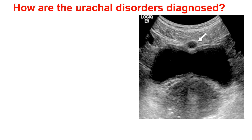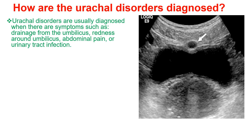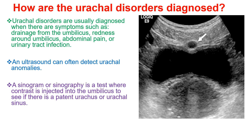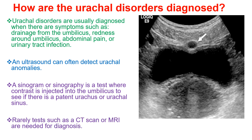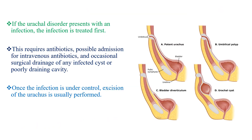When it comes to the diagnosis of urachal disorders: urachal disorders are usually diagnosed when there are symptoms such as drainage from the umbilicus, redness around the umbilicus, abdominal pain, or urinary tract infection. An ultrasound can often detect urachal anomalies. A sinogram is a test where contrast is injected into the umbilicus to see if there is a patent urachus or urachal sinus. Rarely, tests such as CT scan or MRI are needed, but most of the time urachal disorder is diagnosed by ultrasound.